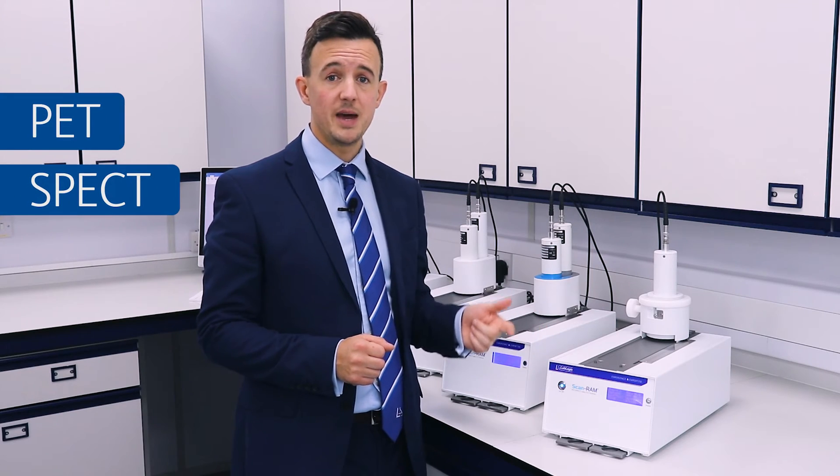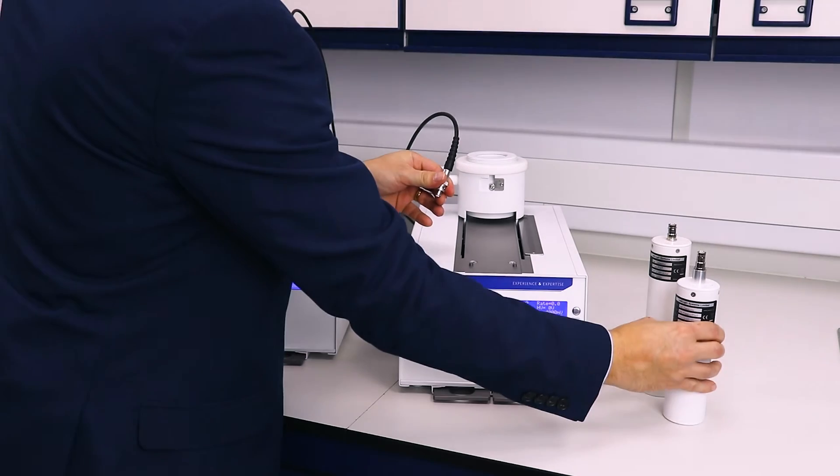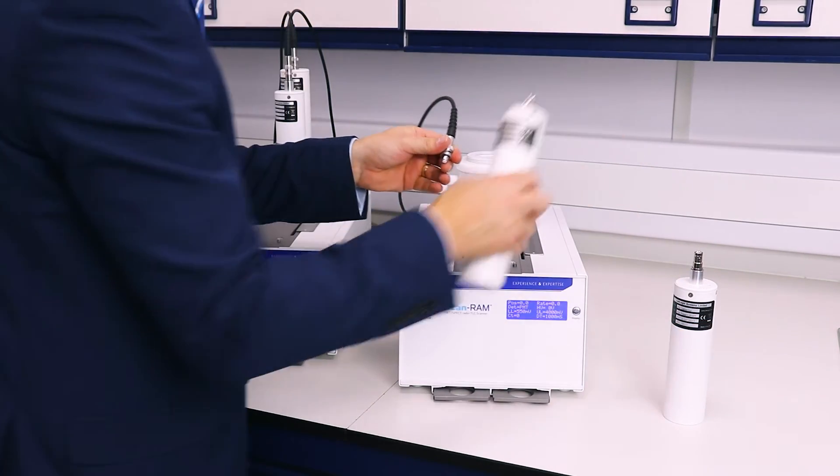A range of detectors can be used with the ScanRAM suitable for a variety of radionuclides including PET, SPECT, High Energy Beta and Alpha. The detectors can be easily changed depending on the radionuclide being detected.